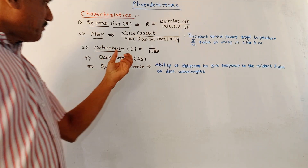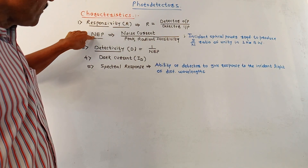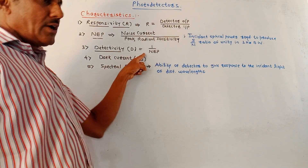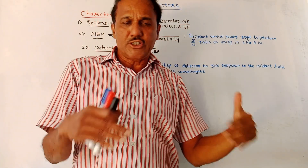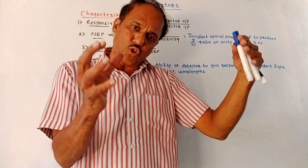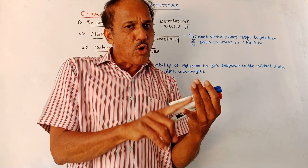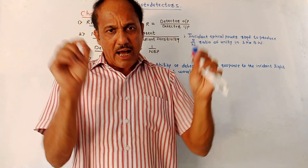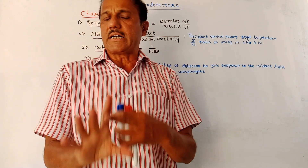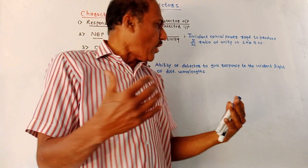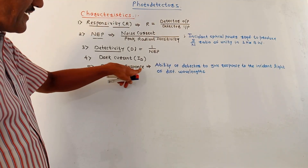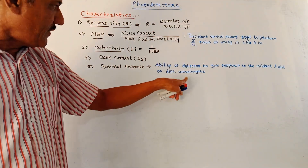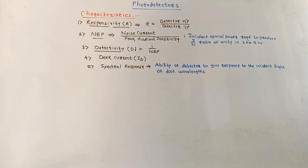Next is detectivity, symbolized as D. It is the reciprocal of NEP — that is, the ratio of peak radiant sensitivity to the noise current. The fourth characteristic is dark current: even if light rays or photons are not falling on the photodetector, some current is still generated at the output due to ambient light. Such currents generated under dark conditions are called dark currents, and they should be as low as possible. The fifth characteristic is spectral response — the ability of a detector to respond to incident light of different wavelengths.